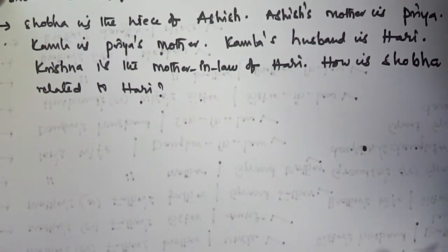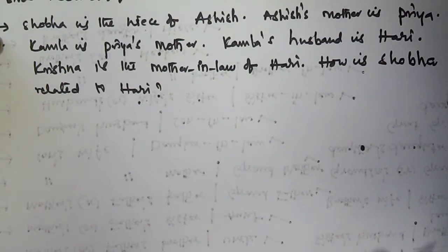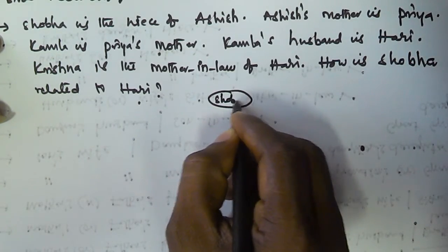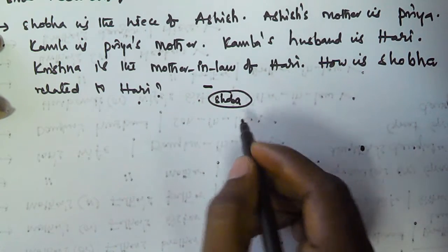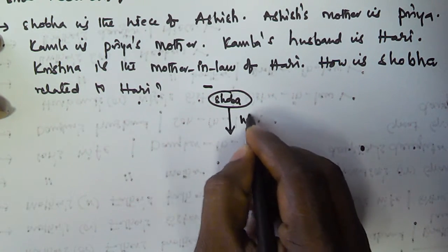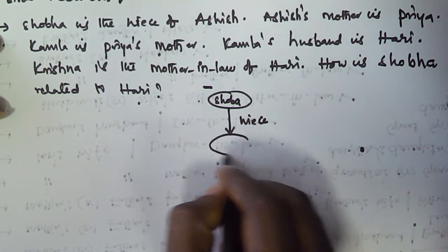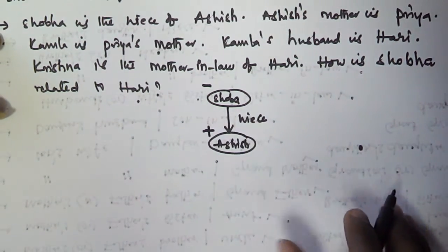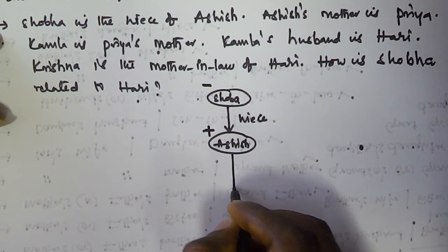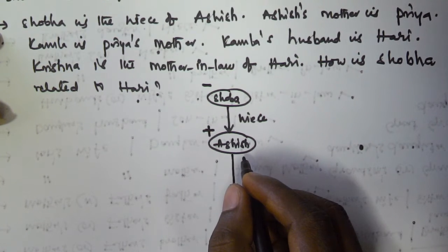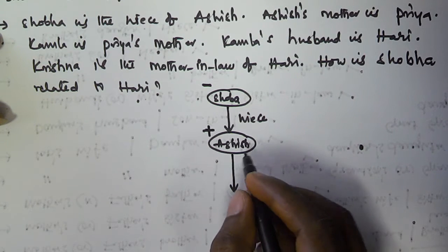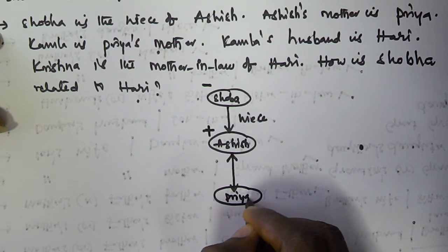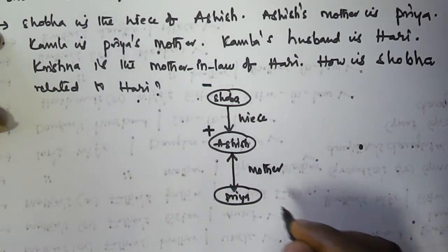How is Shobha related to Harith? It is given that Shobha is the niece of Ashish. Here we have Shobha — she is a female, so I am using a negative sign. She is the niece of Ashish. Ashish is a male, so I am using a positive sign here. Ashish's mother is Priya, so that means reverse sign — Priya is the mother of Ashish.